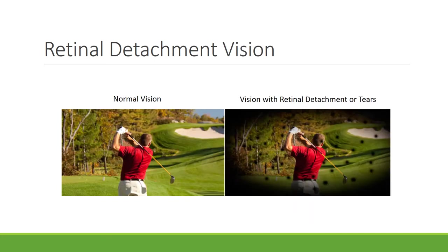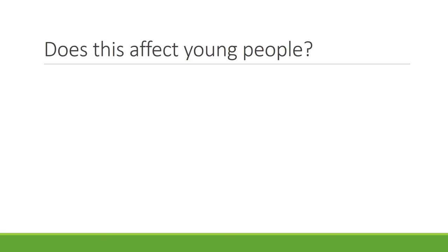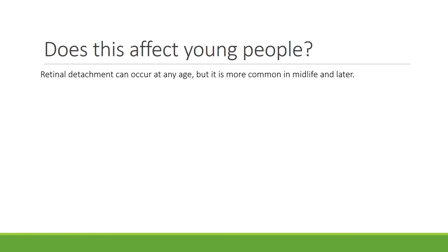You can compare normal vision with retinal detachment and see the dark fog that occurs in a person's peripheral vision. Retinal detachment can occur at any age, but it is more common in mid-life and later. It is quite uncommon, however, and only about one person in 10,000 is affected.